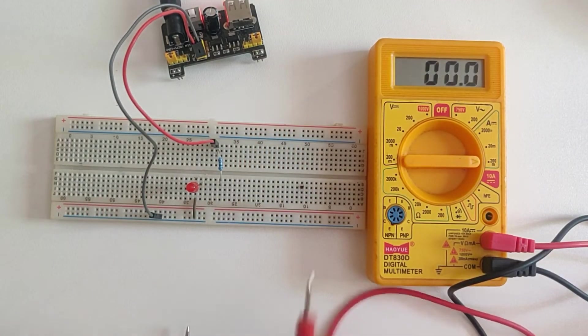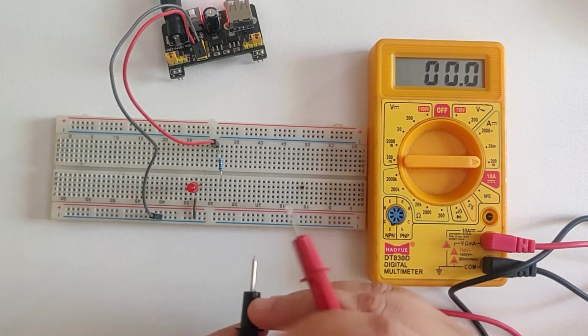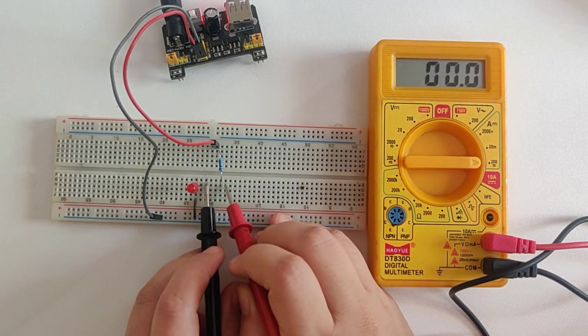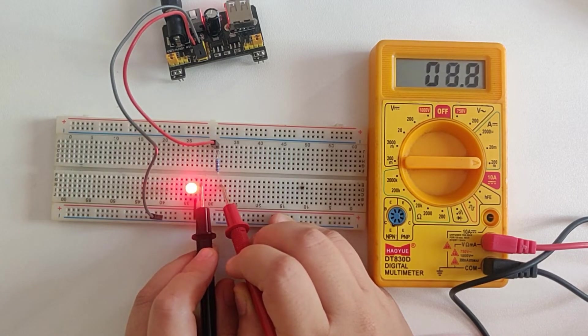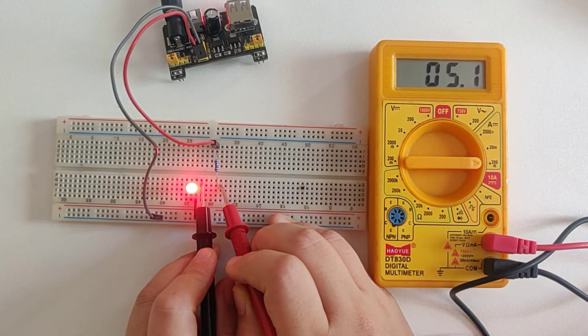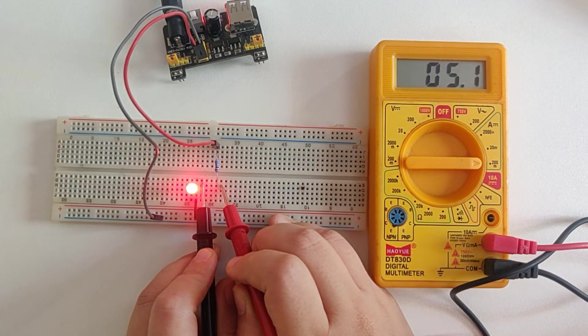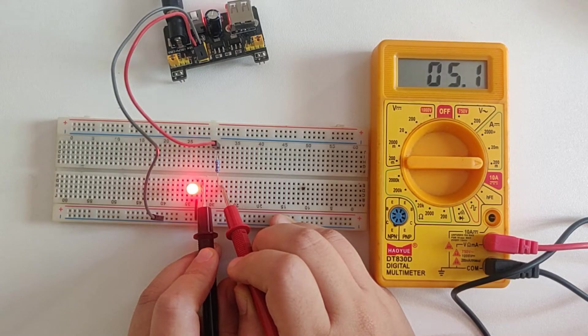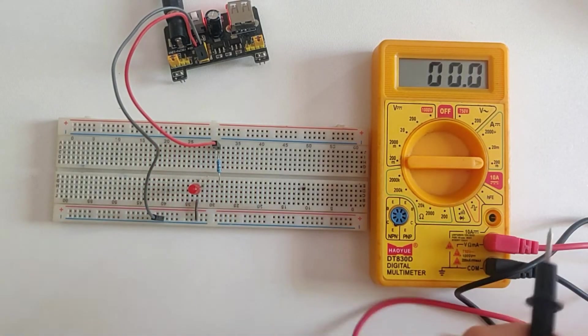And I'm going to break the circuit here and I'm going to connect the multimeter in between the LED and the resistor. Which means I'll touch one probe of the multimeter to the LED and the other one to the resistor. So with that, our multimeter is in series with this circuit.